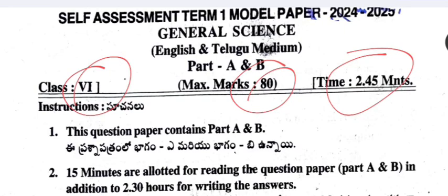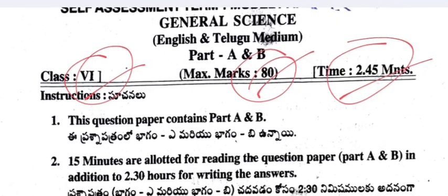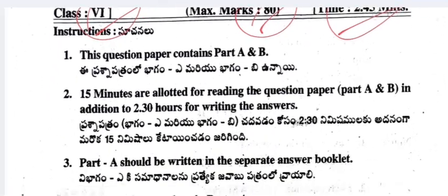Welcome to my YouTube channel. Today's video is about the self-assessment term 1 model paper of 2024-25, general science, English medium, 6th class, 80 marks, time 2 hours 45 minutes. The complete question paper with answers is brought before you, so do not skip any part of this question paper. If needed, you can take a screenshot.